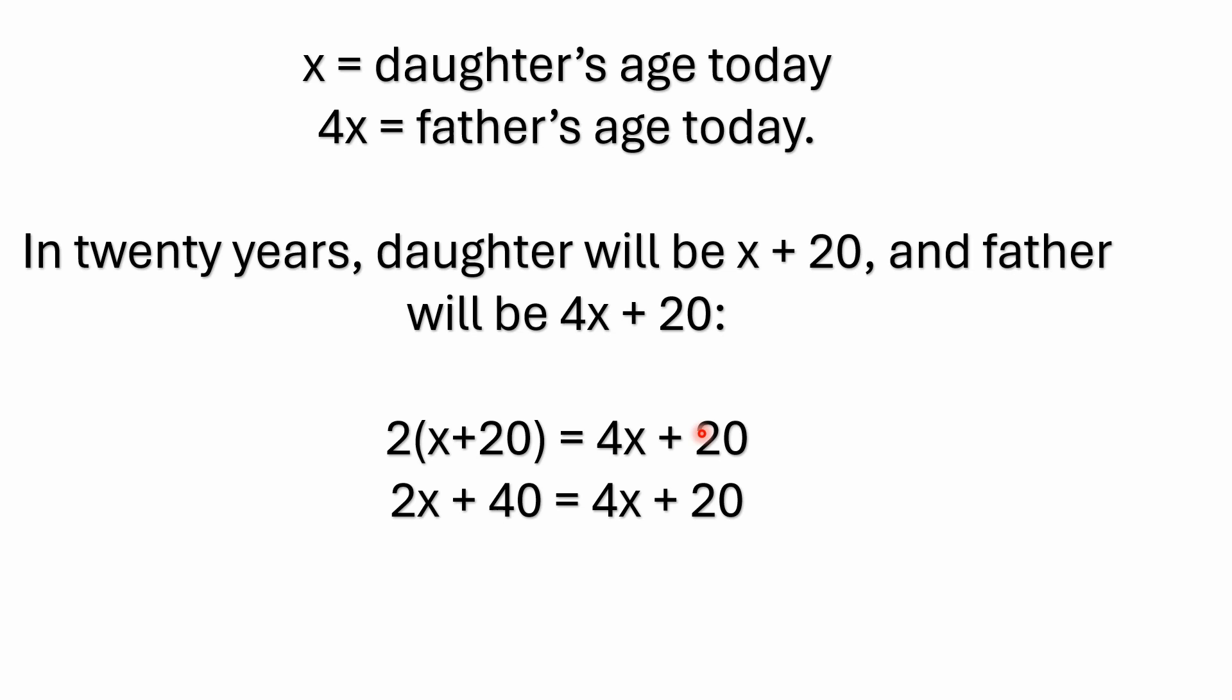The other part of the problem we've got, the other information we've got is that in 20 years, the daughter will be X plus 20 because you're basically going to add 20 more years to her current age, whatever it is. And then the father is going to be 4X plus 20. Because we know the daughter is X, the father is 4X currently, we just add 20 to both of those. And that relationship will be the same.